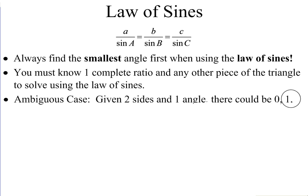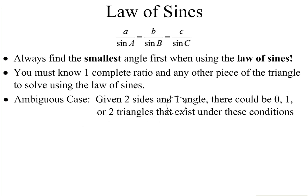The ambiguous case occurs when you are given two sides and one angle. If the information given is two sides and one angle, there could be zero triangles, one triangle, or two triangles that exist under those conditions. You need to identify the ambiguous case right away as you start the problem, otherwise you won't know to solve for a second triangle if there is one.